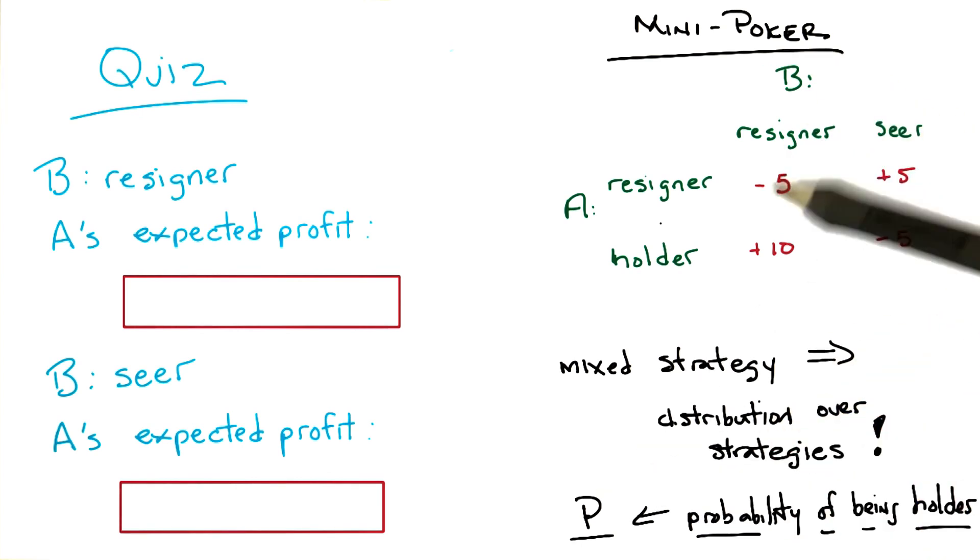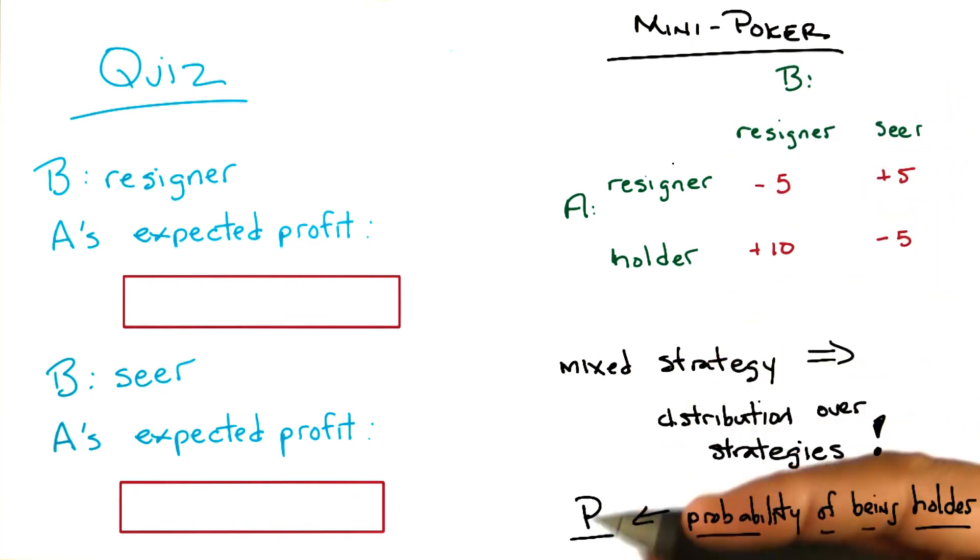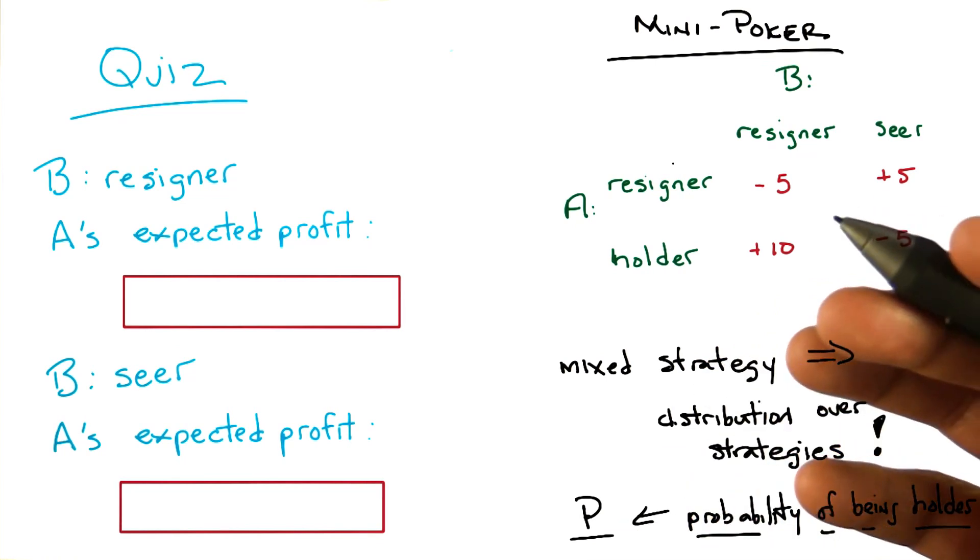Yep. Whereas with pure strategies, you always chose one or the other. So technically, it's the case that a pure strategy is also a mixed strategy, where all the probability mass is on a single strategy. Makes sense.